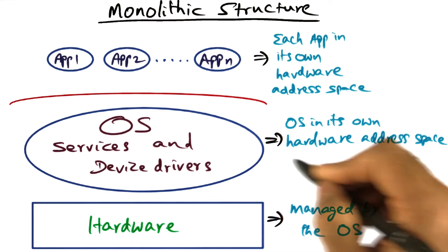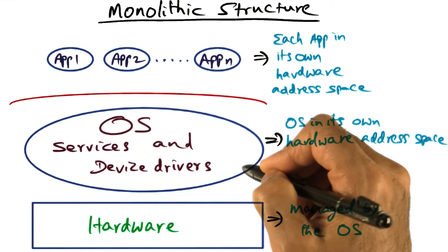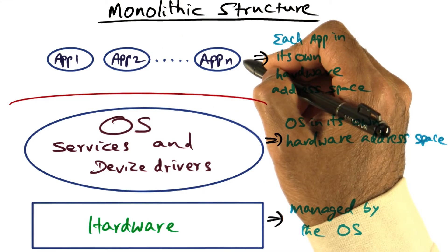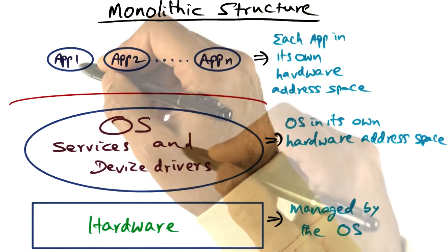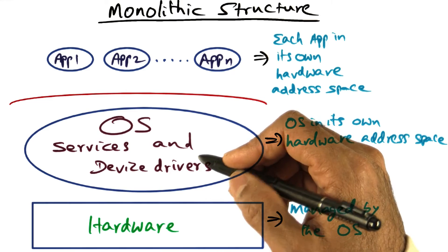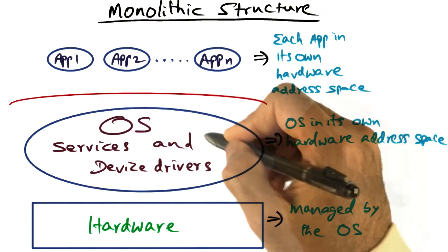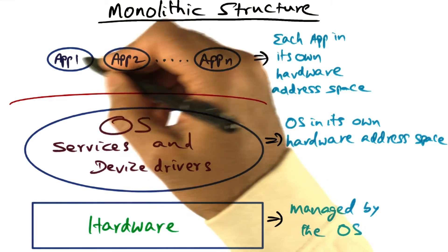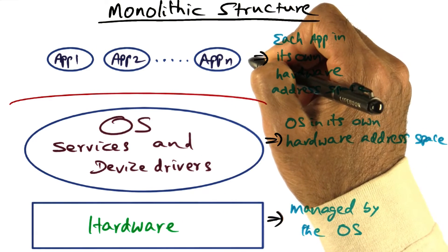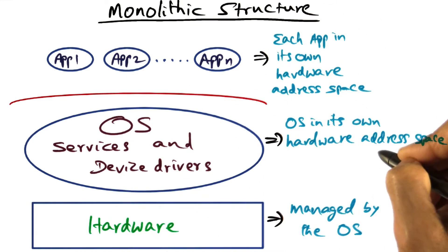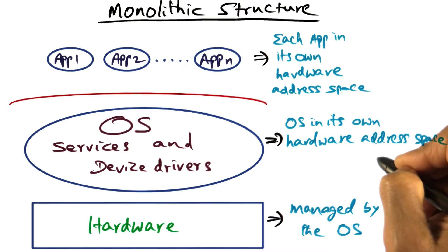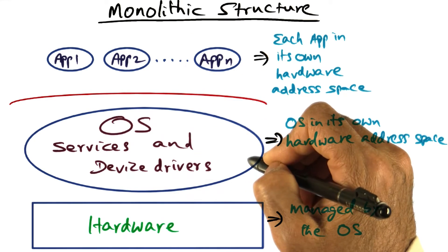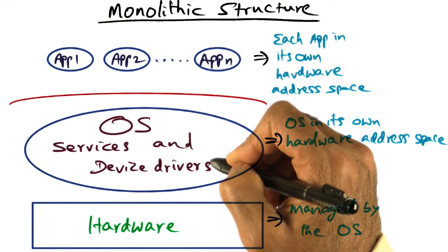What that means is that the operating system is protected from the applications, and vice versa. So even if an application were to do anything in terms of misbehavior — either maliciously or unintentionally — because they are in their own address spaces and the operating system is in its own hardware address space, malfunctioning of an application does not affect the integrity of the operating system services.